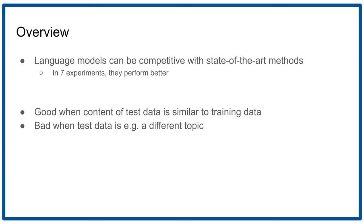Our main finding is that pre-trained language models, especially transformer-based ones, can be competitive with state-of-the-art methods for misinformation detection. And in seven experiments, they actually perform better. In general, they're good when the content of the test data is similar to the training data, and they're not so good when the test data is quite different — for example, when it's a completely different topic.